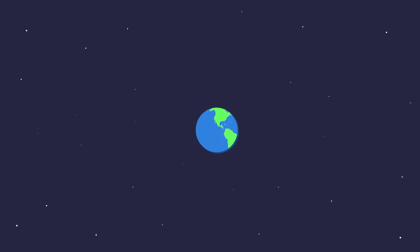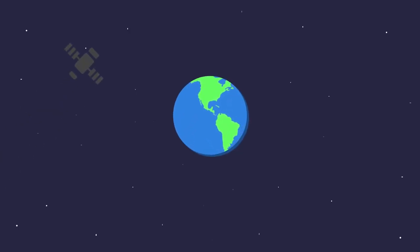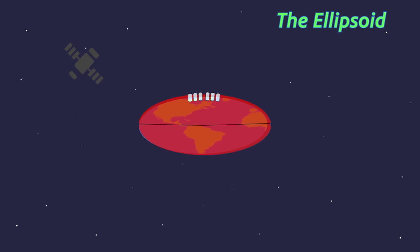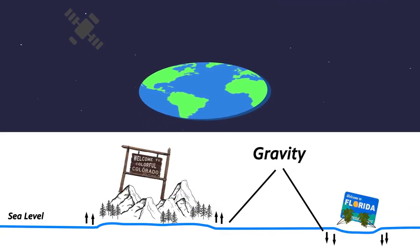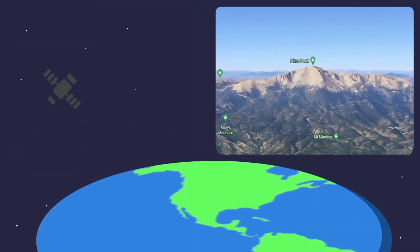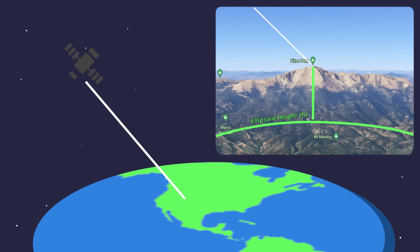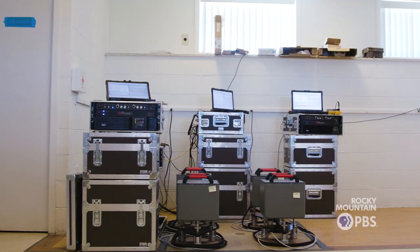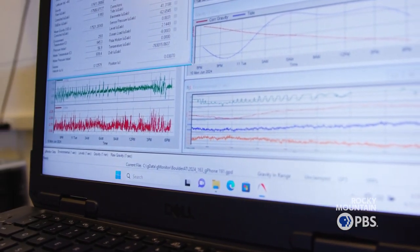GPS's positioning is relative to something called the ellipsoid — it's the average shape of the Earth, and from the side it looks like an Australian rules football. We need something that tells us about the gravity part. What we do is use where sea level is under Colorado, which takes gravity into account. You take your ellipsoid height from GPS and subtract the difference from the ellipsoid to the sea level our agency provides — and you now know your height above sea level in a way that takes gravity into account. Our new system is something like 10 times more accurate.